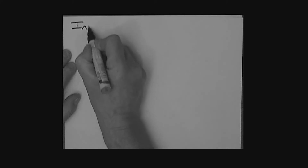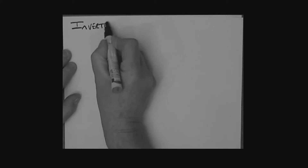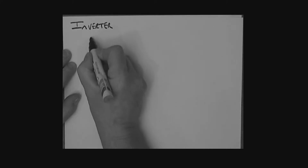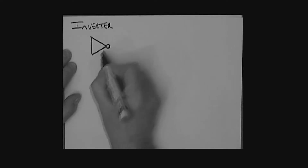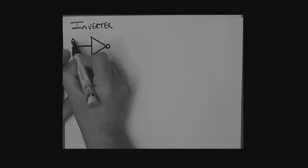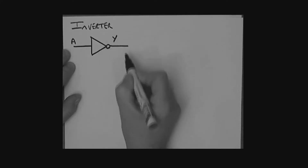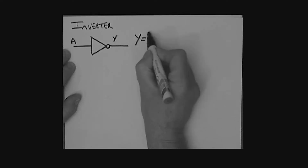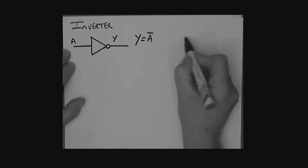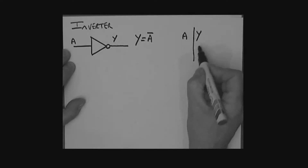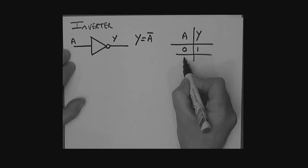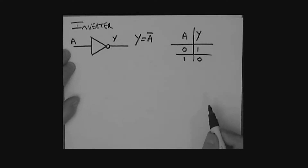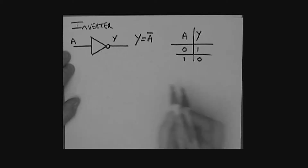Now let's look at an inverter. Here is the symbol for the inverter with input A and output Y. Y is equal to the inversion of A, which is A-bar. Truth table: if A is 0, Y is 1; if A is 1, Y is 0. Now let's look at the NOR gate.